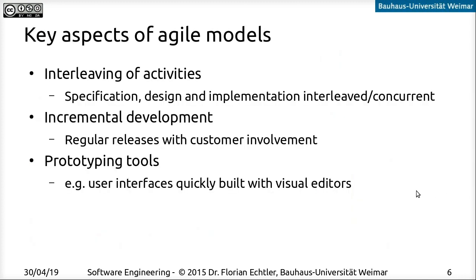What are the most important aspects of agile models? We always have interleaved activities — specifically, specification, design, and development happen in cycles or even at the same time. We follow an incremental development approach with regular releases, maybe every two weeks, that the customer gives feedback on. We also use prototyping tools — for example, building a mock-up of the user interface in HTML5, quickly put together just to show an idea of how the UI might look, or even paper prototyping where you sketch it out on paper.